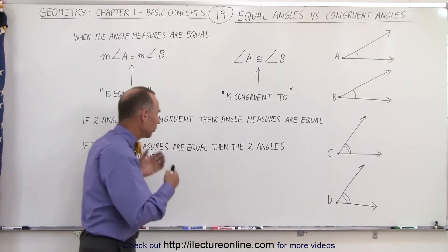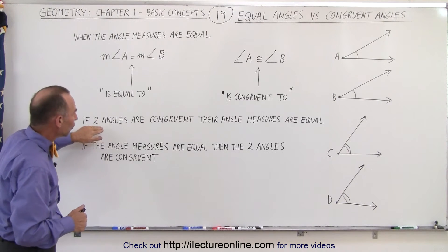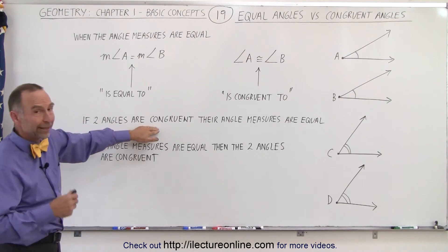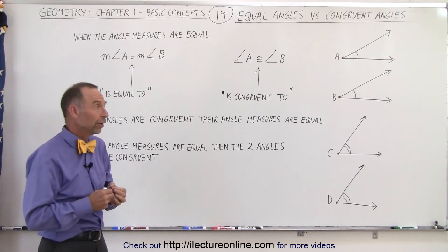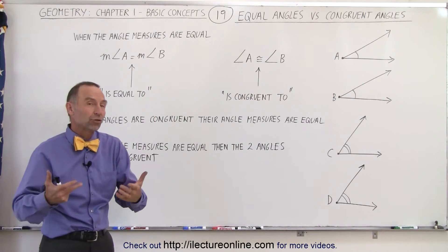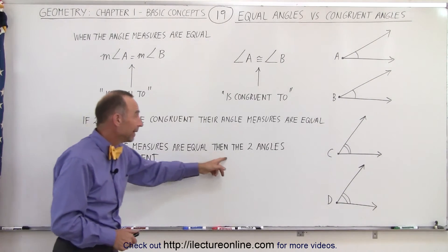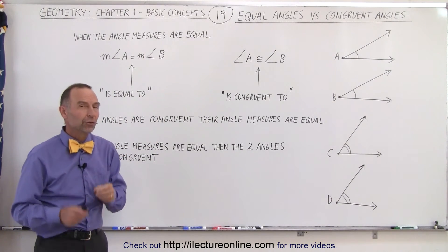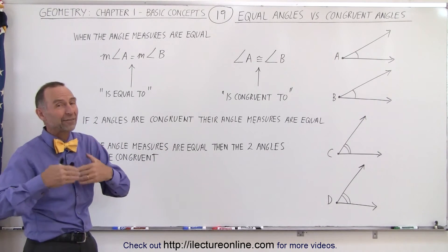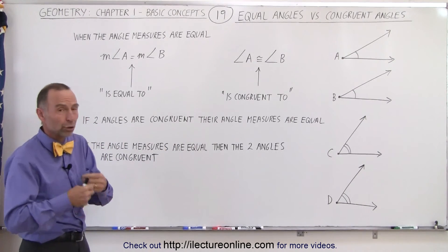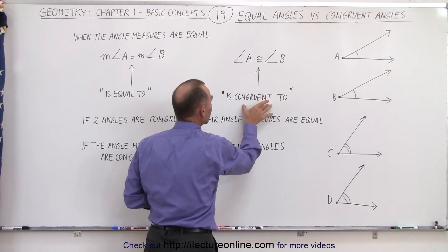What's the difference? Well, it all comes down to these two sentences. If we have two angles and those two angles are congruent, that implies that their angle measures are equal. So when we say that two angles are congruent, that simply means their angle measures are equal. And if the angle measures are equal, then the two angles are congruent. We use the word congruent when we have two similar angles with the same angle measure — they are congruent.